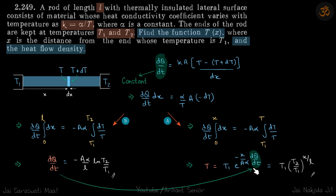We have a term of dQ/dt here, so we'll just replace that from what we found and get our answer. Temperature as a function of x is T1 times T2 by T1 to the power x by L.